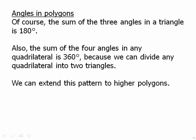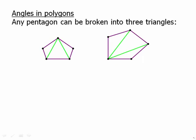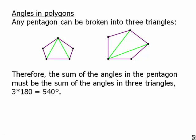Any pentagon can be broken into three triangles. So for any single vertex we can draw two diagonals. That divides it into three triangles and therefore the sum of the angles in the pentagon must be the sum of the angles in three triangles. Three times 180 which is 540. That's a good number to know.